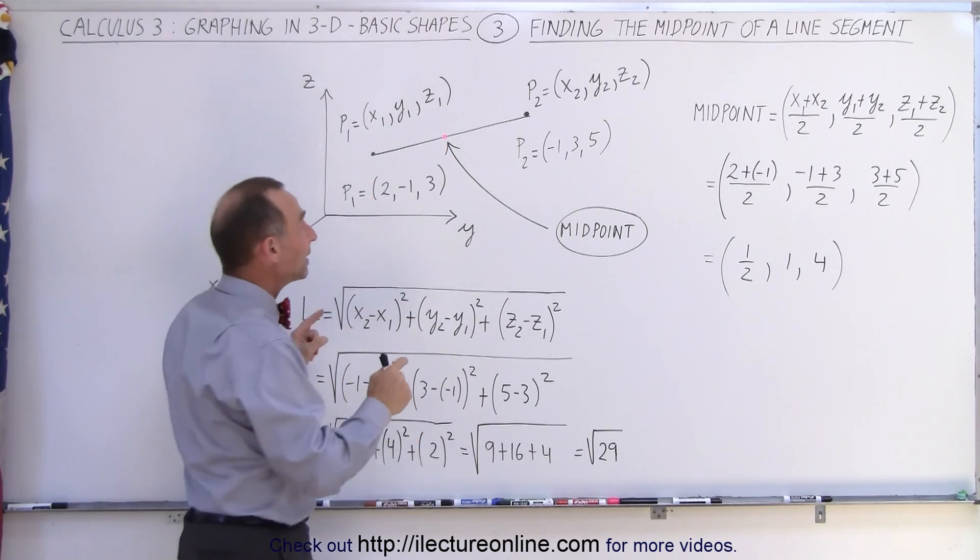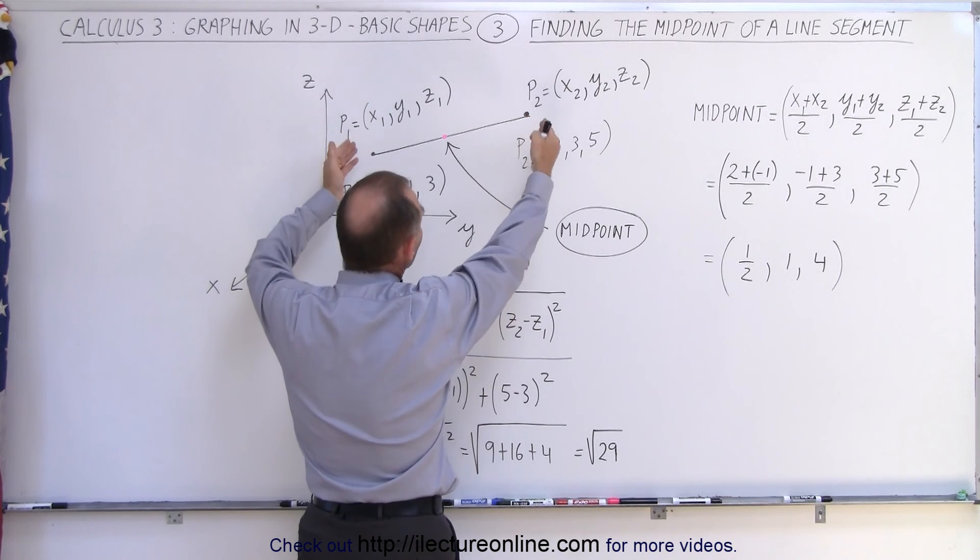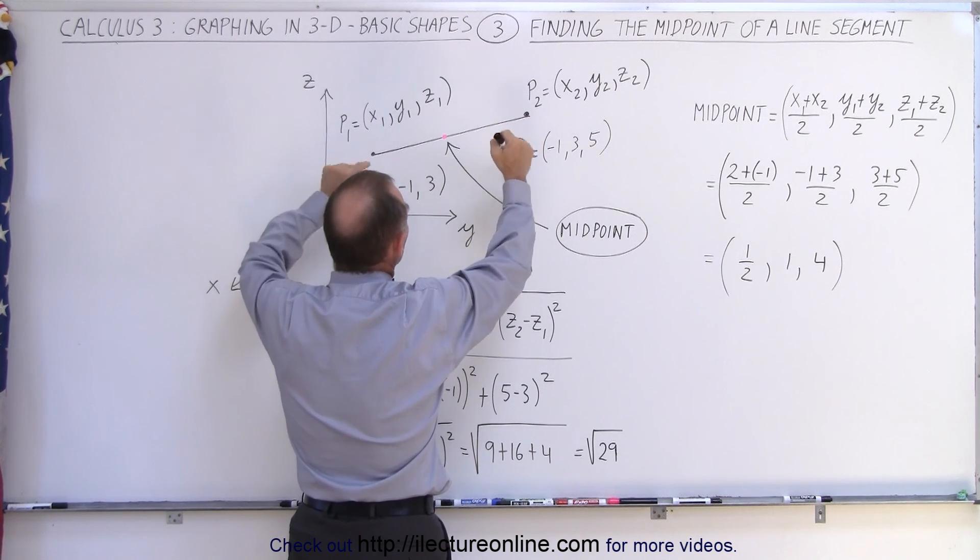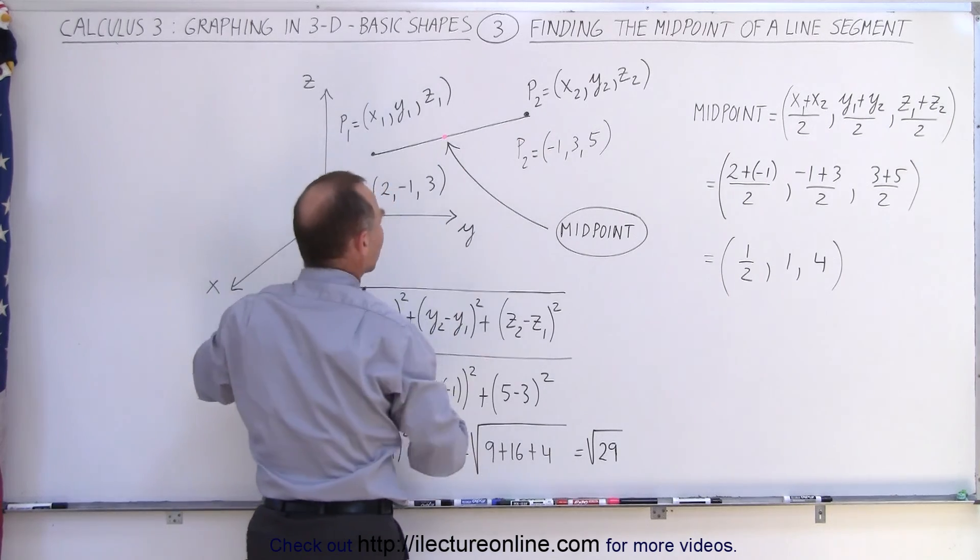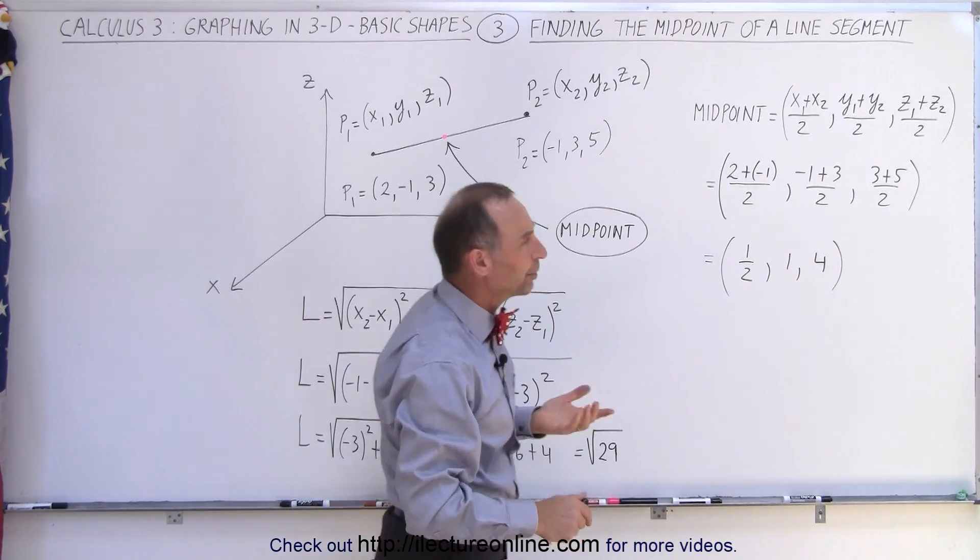To do that, we add the x components together of both points, divided by 2. Add the y components together of both points, divided by 2. And add the z components together, divided by 2. And that's how you find the x, y, and z component of the midpoint.